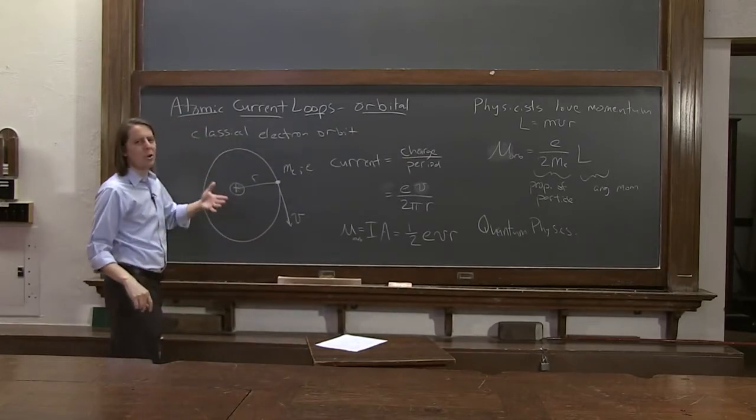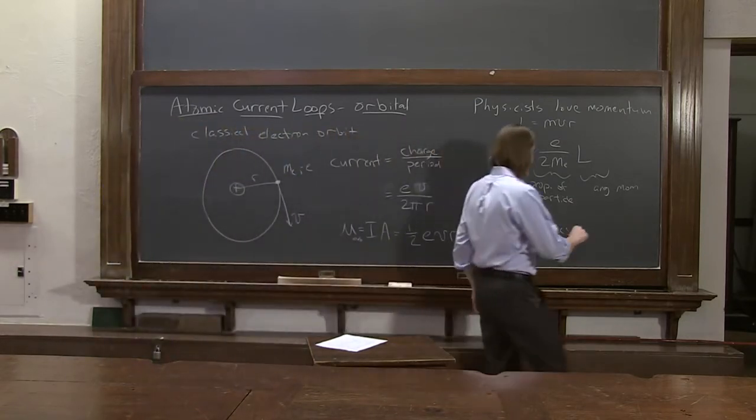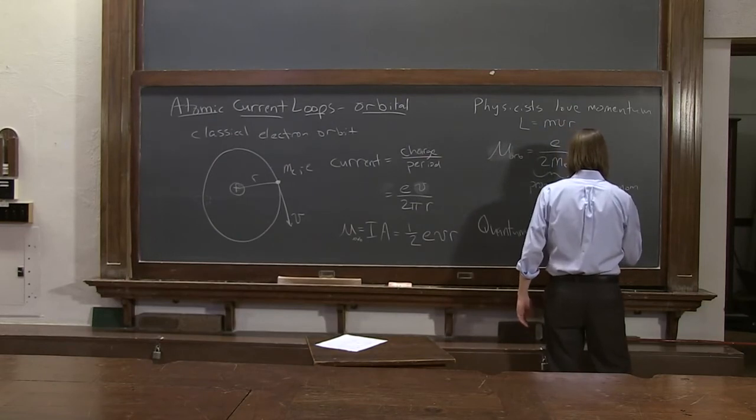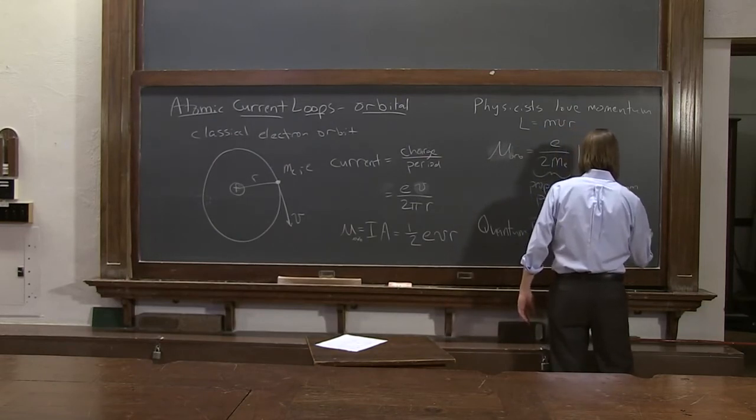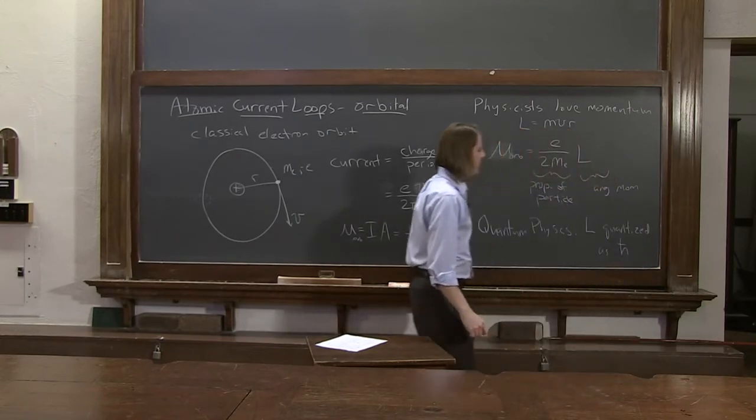Quantum physics says momentum, angular momentum can't be any value, it can only be quantum, or quantized values. So it's quantized. L is quantized as h-bar. So that's Planck's constant.